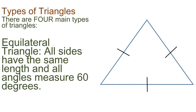Types of Triangles: Equilateral triangle. All sides have the same length and all angles measure 60 degrees.